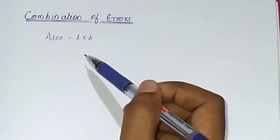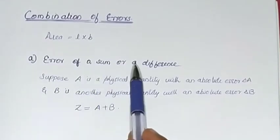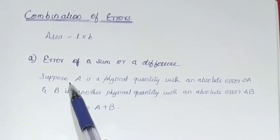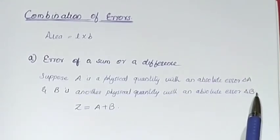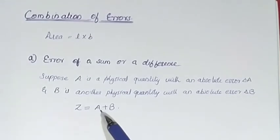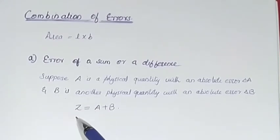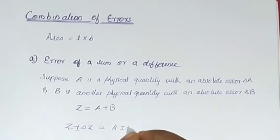The procedure we follow in such mathematical operations is as follows. The first operation we consider is sum and difference — how to find the error of a sum or a difference. Suppose we have two physical quantities a and b, with absolute errors delta a and delta b respectively, and we have to find a third quantity z which is the sum of both a and b. Since both a and b have errors, the third quantity z will also have an error. We represent it as: z ± delta z = (a ± delta a) + (b ± delta b).